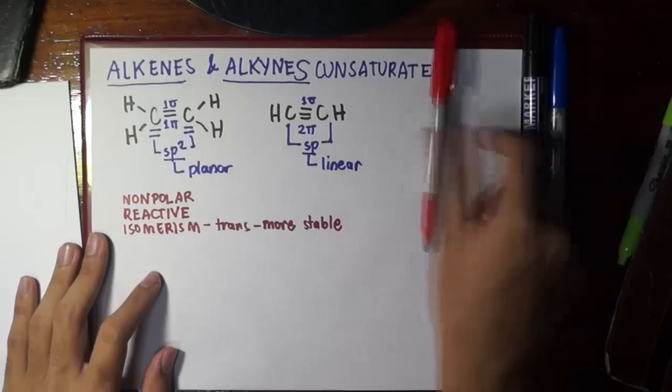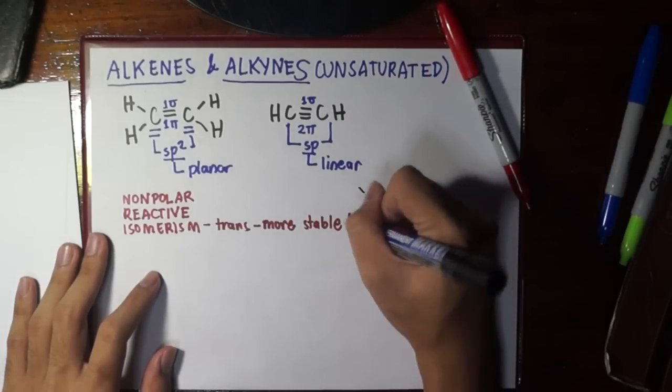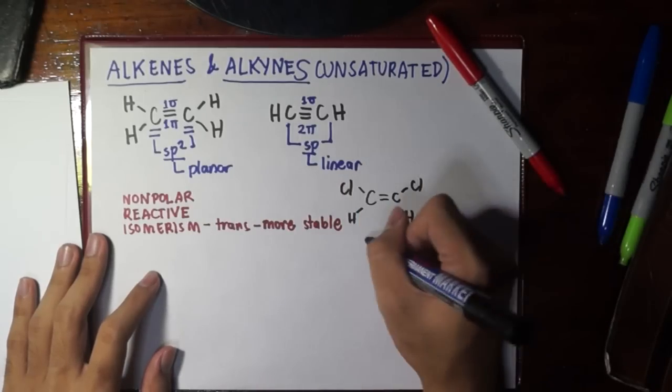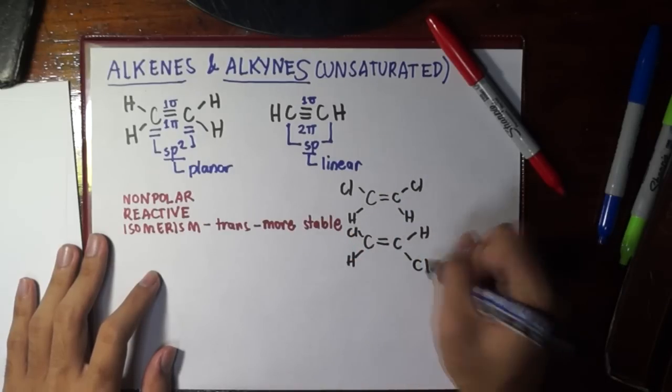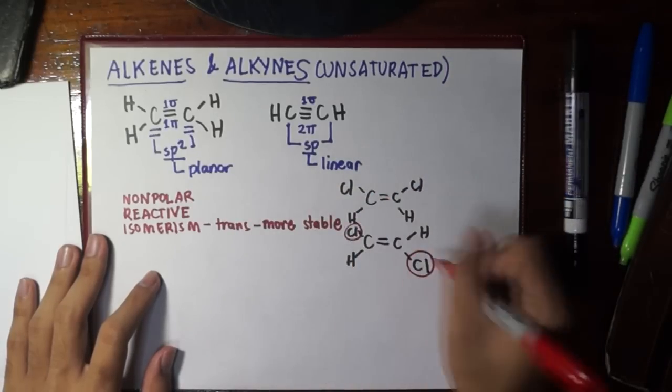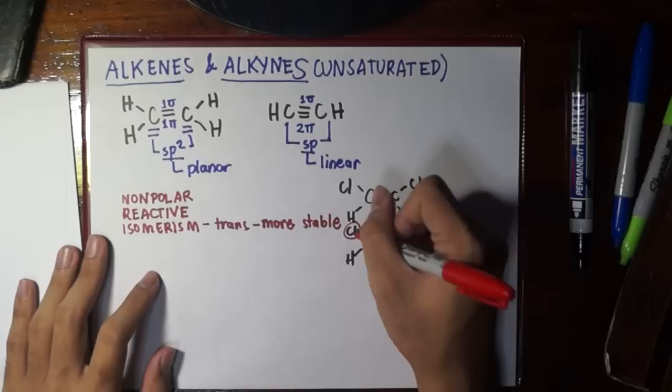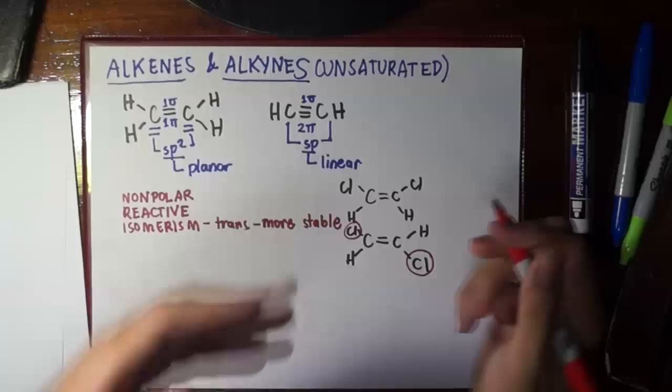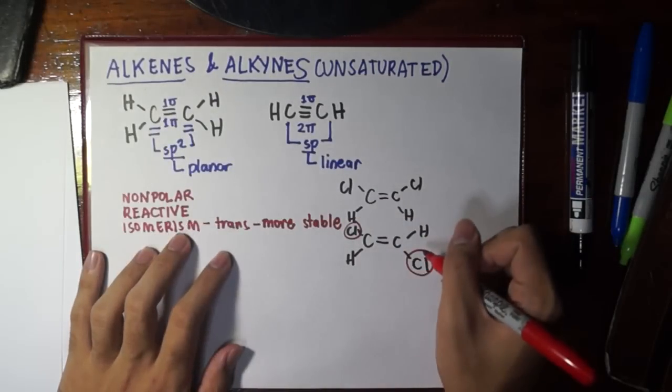Let's give an example so we can remember. For example, we compare this cis isomer because it's on the same side, and this is the trans isomer. In the trans isomer, the two chlorines are far from each other, making it more stable because they will repel if these groups are bulky. Being farther from each other makes it more favorable and more stable.